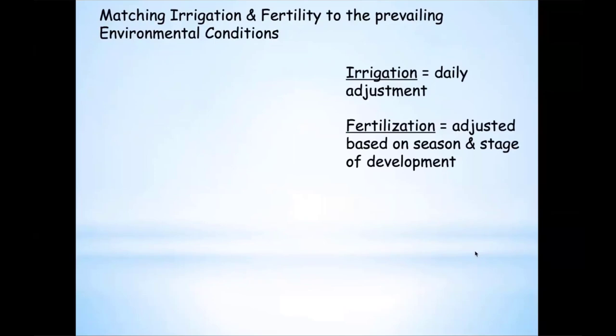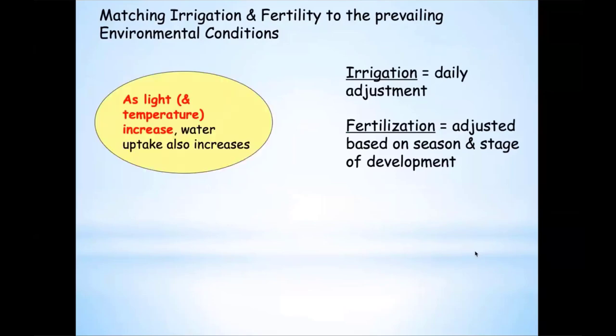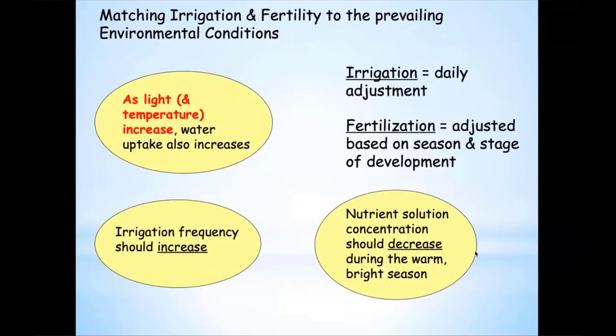Irrigation — we try to match the carrying capacity of the plant and the prevailing environmental conditions. Irrigation is something we adjust on a daily basis. Some days are bright and warm and we're moving a lot of air through the greenhouse, so irrigation demand goes up. Some days are not warm or bright, and irrigation goes down. Fertility is based on season and stage of development — we can't make those types of fine adjustments on a quick daily basis. As light and temperature increase, water uptake is also going to increase and irrigation frequency should increase.